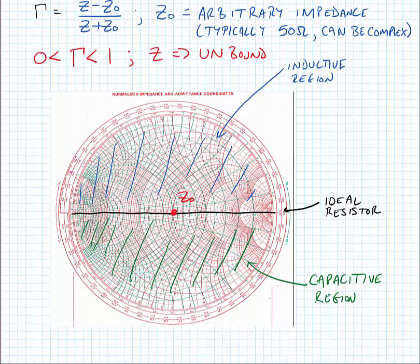Next we'll look at the way that components move on the chart. In general, inductors will move upward into the inductive region on the chart. So I've drawn a line for a series inductor. A shunt inductor is going to move upwards on a line of constant conductance.